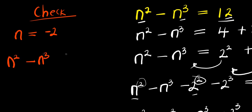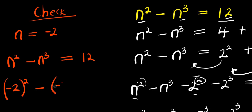Minus n³ equals what? Meaning, this is (-2)² - (-2)³ equals what?